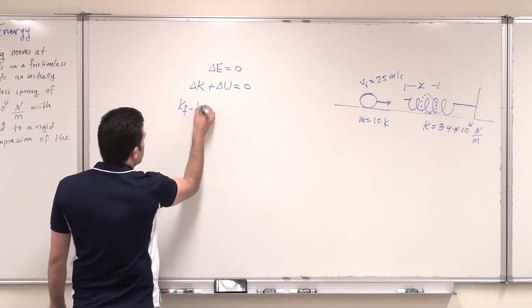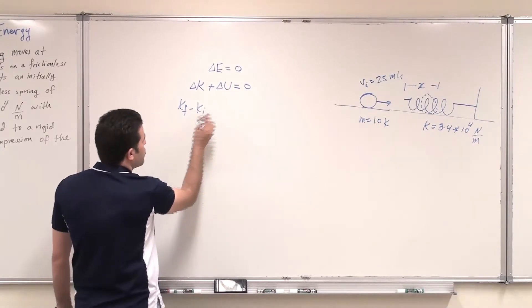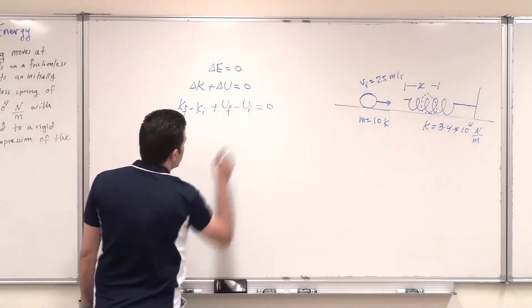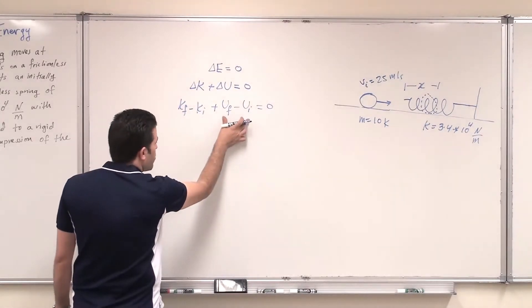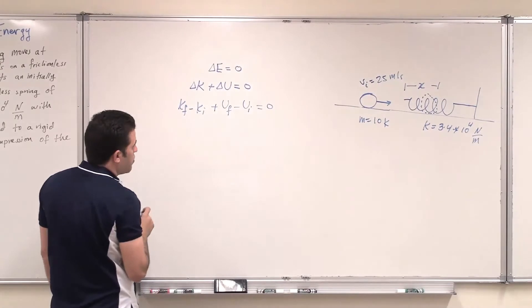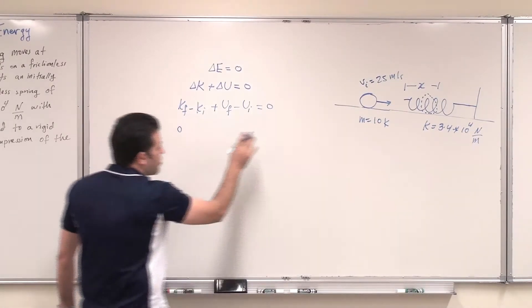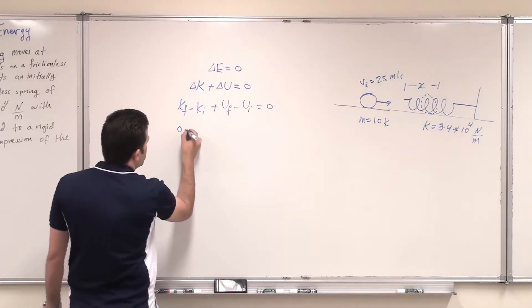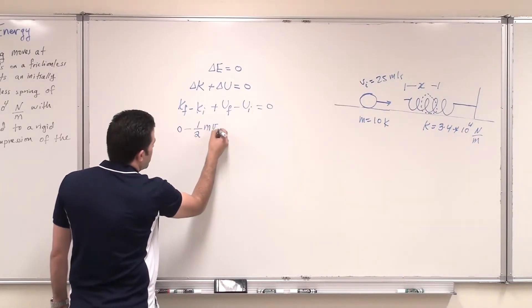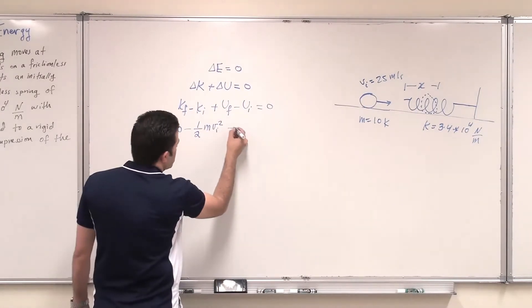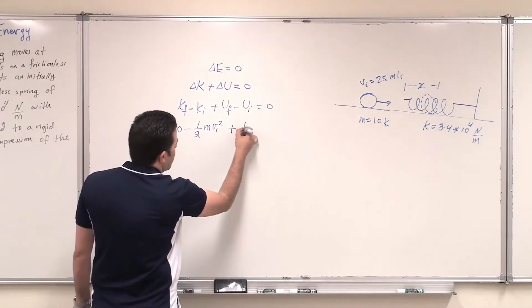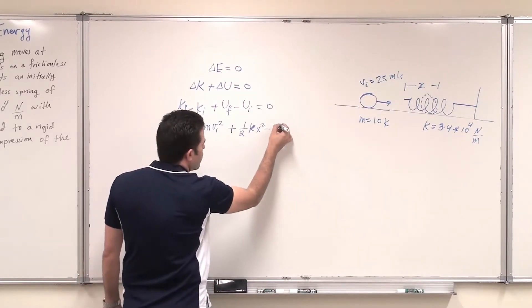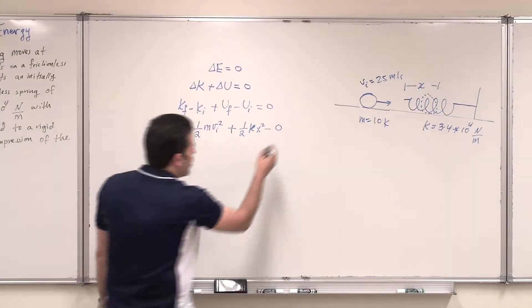The change in mechanical energy is due to change in kinetic energy plus change in potential energy, which should equal zero. So: (K final − K initial) + (U final − U initial) = 0. The potential energy of the spring is half kx squared, and kinetic energy is half mv squared. K final should be zero because at the final position the mass stops. So: minus half mv initial squared plus half kx squared equals zero, where U initial equals zero since the initial compression is zero.